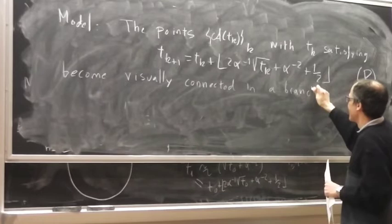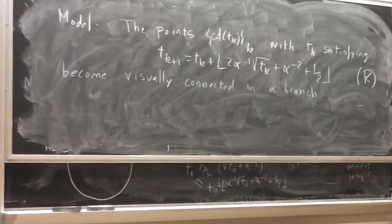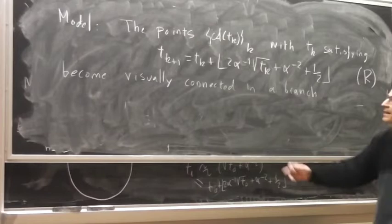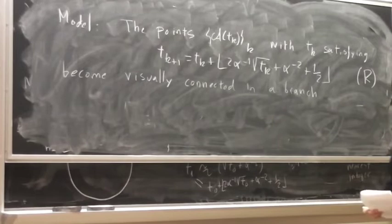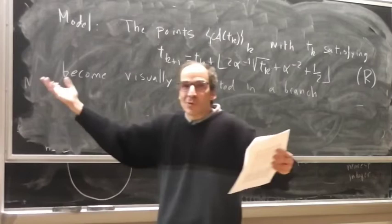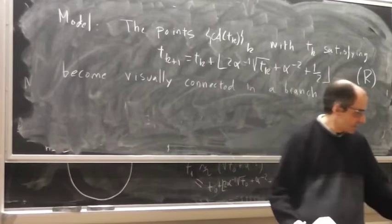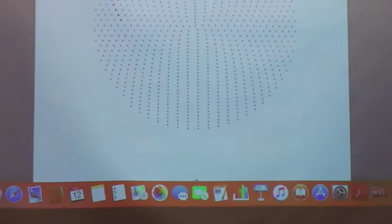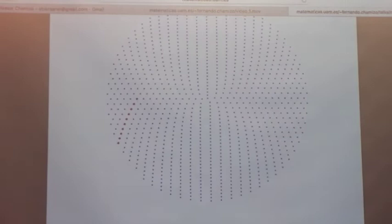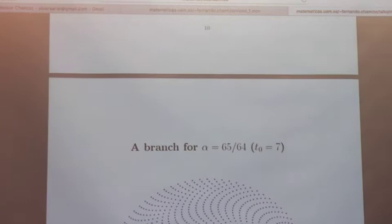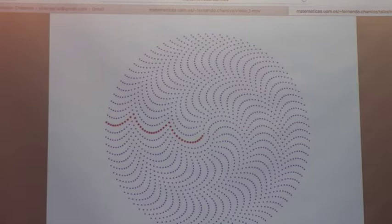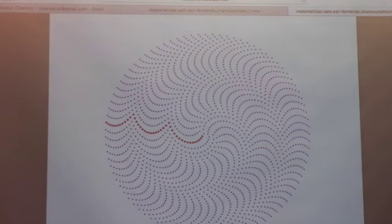We can check this model with the computer. For instance, I have put a value of t0 and computed all of these subsequent values — I get something like this. This corresponds to an atom, so to speak, of the pattern I see in the picture. The same happens with other values: different values of t0 give different atoms, and the same sub-pattern structure.